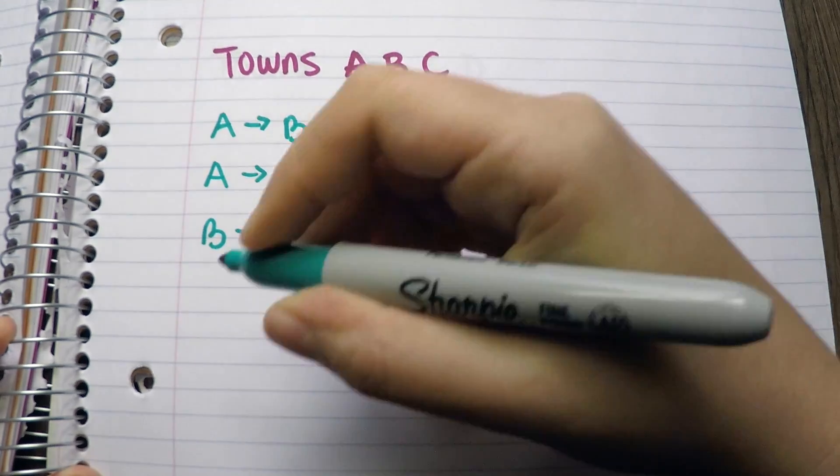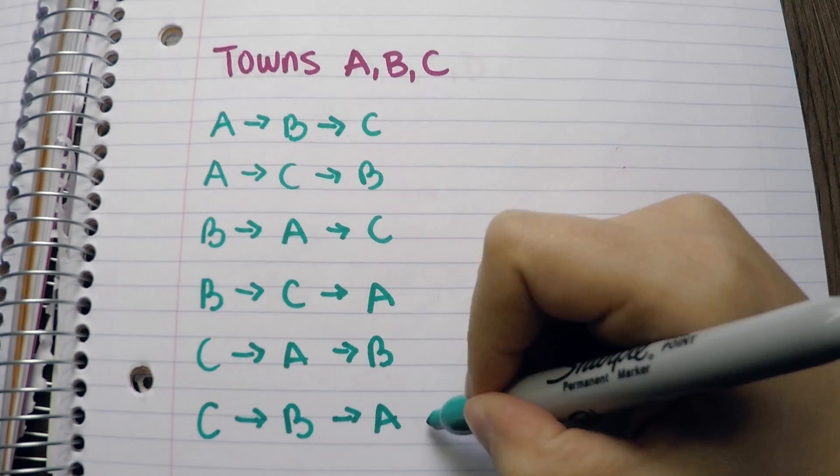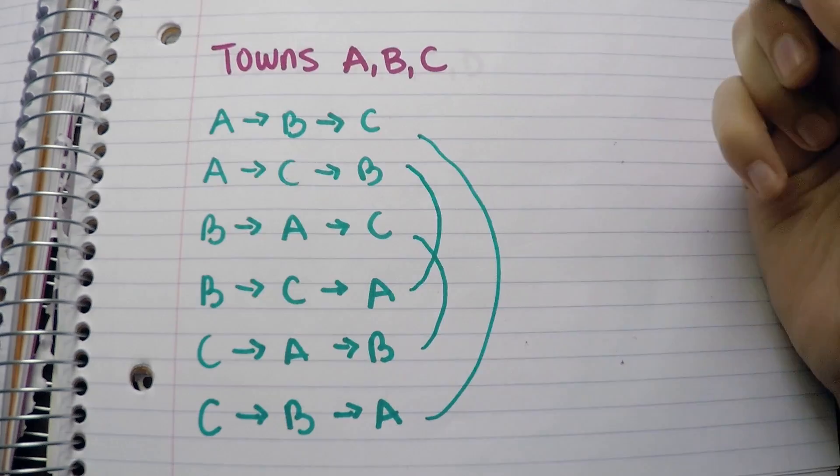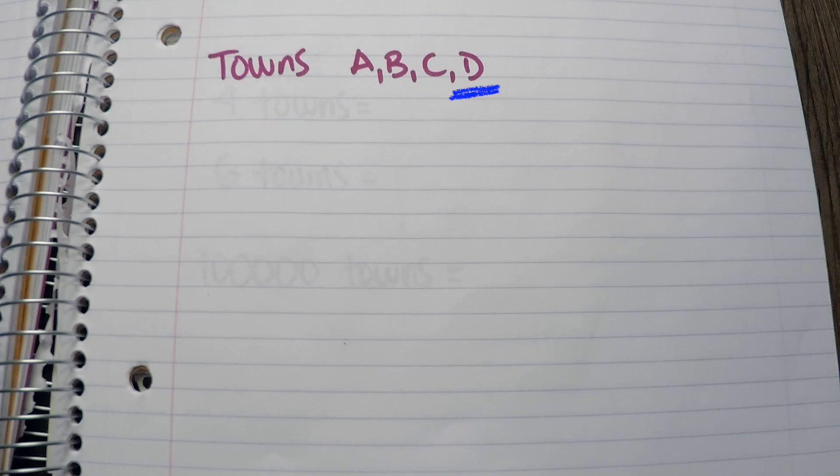He could also try B, A, and C. And so on. The last three are actually equivalent to the first three. They're just reversed. So in reality, the salesman has three possibilities.